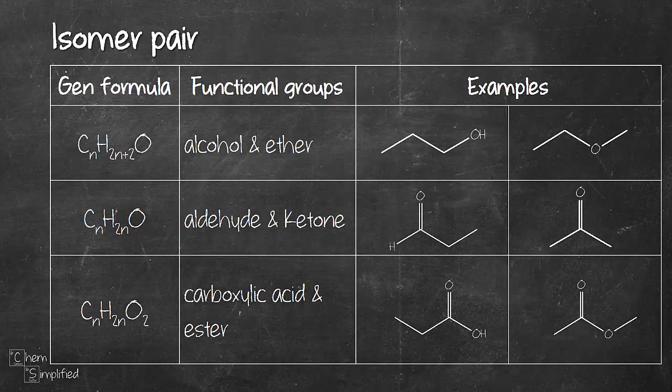When you're asked to draw isomers and the formula that you're given has more than carbons and hydrogens, you might want to consider drawing more than one kind of functional group. For example, if you have a chemical formula that falls under this general formula of CnH2n plus 2O, the structures that you want to draw out for the isomers, consider including alcohols and ether. And if you have CnH2nO, consider drawing out the structures for aldehyde and ketone.